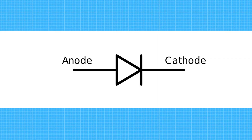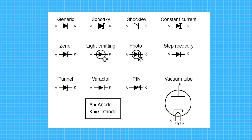This is the symbol of a diode — it is a classic symbol and you will often see it. But there are more types of diodes and so more symbols for each type. In the pictures you can see some symbols for some special types.